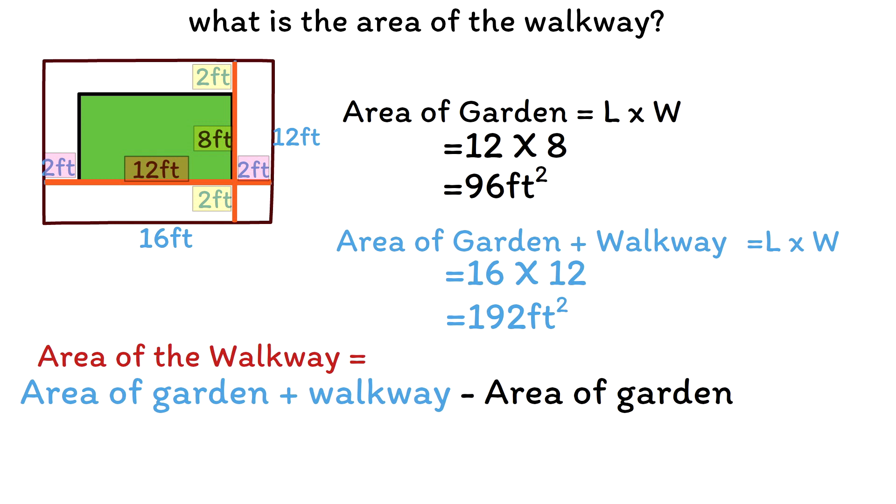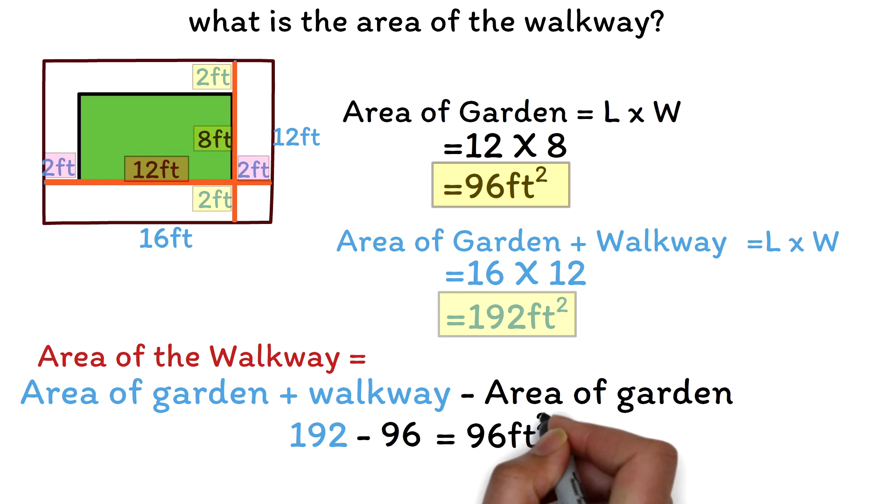Substitute the value for the area of the garden plus the walkway, which is 192, and the area of the garden, which is 96. Subtract 96 from 192, and this will give 96 feet squared as the area of the walkway.